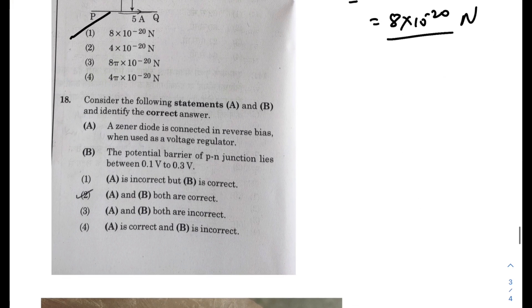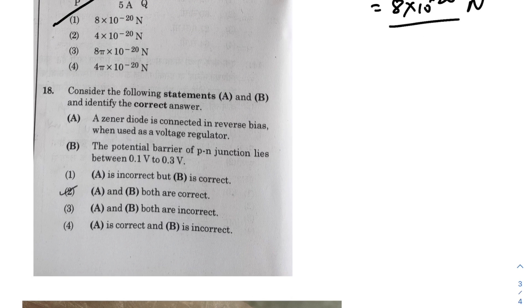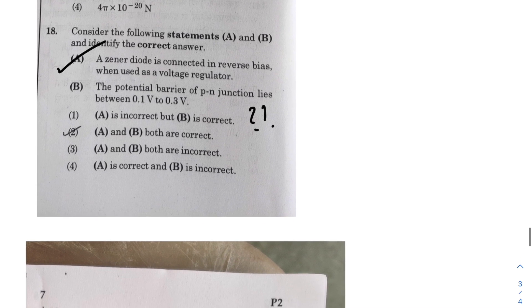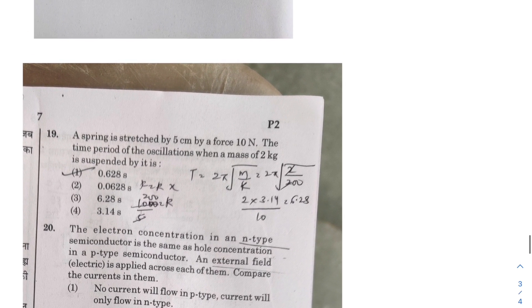Next, consider the following statement and identify. A zener diode is connected with reverse bias - we know this. The potential barrier of a p-n junction lies between 0.1 volt and 0.1 - for silicon we know it is 0.7. So it would be doubtful to say. For germanium we have 0.2. So I think this is somewhat a dubious one. First is definitely correct. So A is correct, and for B it could be anything, it is tough to say at this point. We will give the final answer afterwards, leave it for now.